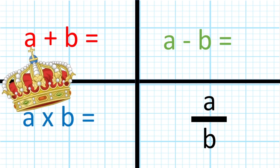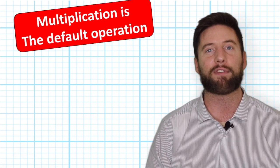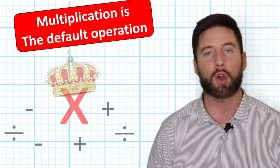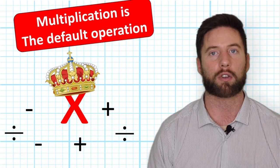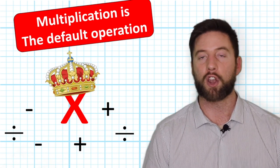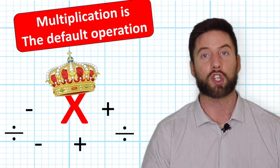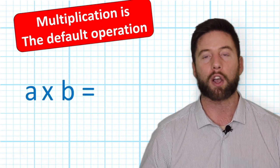That's because in algebra, multiplication is the go-to, the standard, the default operation. If you don't see a symbol, you are going to multiply. So therefore, if there are no other arithmetic operations shown between two symbols, we are going to multiply.